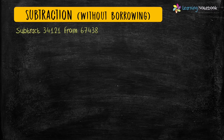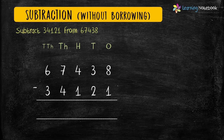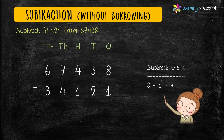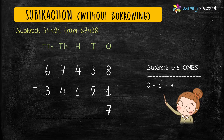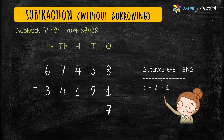The question is: subtract 34,121 from 67,438. To subtract these five-digit numbers, first let's write them in columns as shown here. Now let's start subtracting from the one's place. 8 minus 1 equals 7. Next, subtract the digits at the tens place.